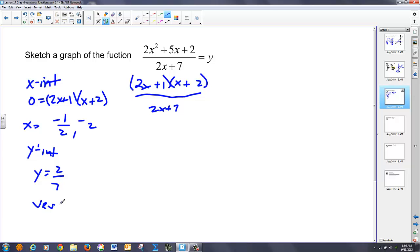Vertical asymptotes is negative 7 over 2. And now let's do our long division. 2x times what is 2x squared? That's an x. I get 2x squared plus 7x. Subtract. Negative 2x plus 2. Multiply by a negative 2. And there's my equation of my line.